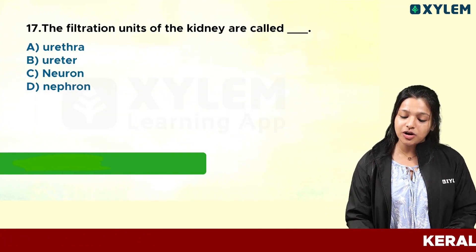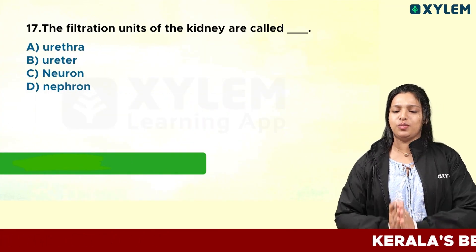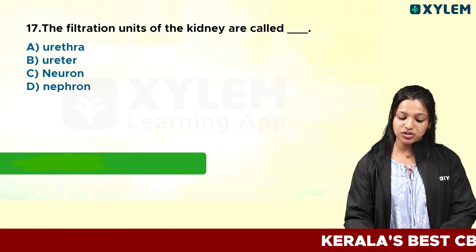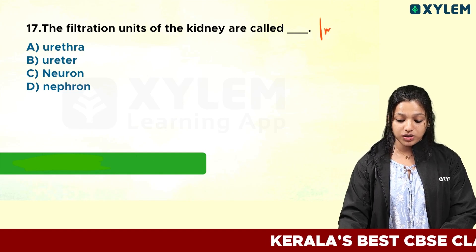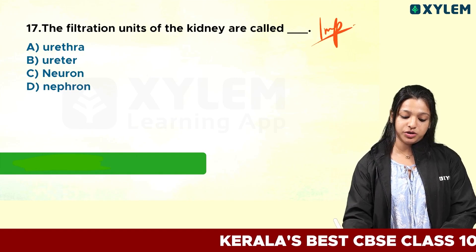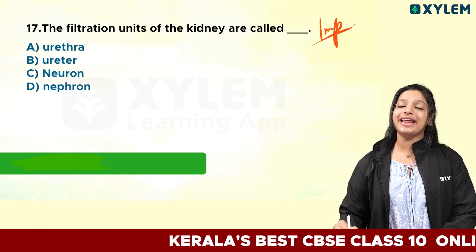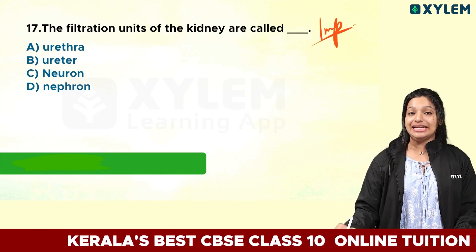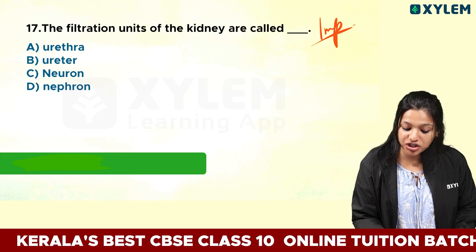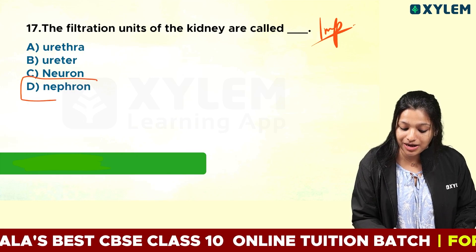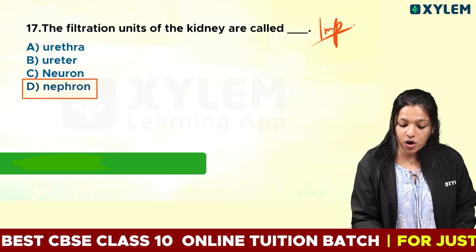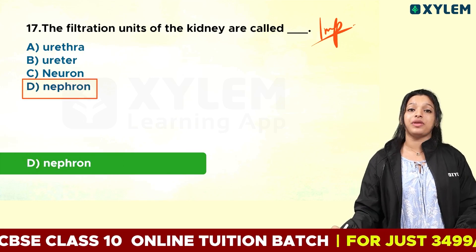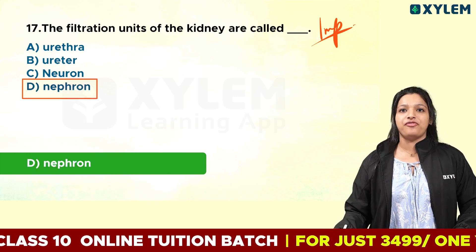The filtration unit of the kidney is called what? Very important — the most important question. The filtration unit of the kidney means nephron. What is nephron? It is the filtration unit of the kidney.